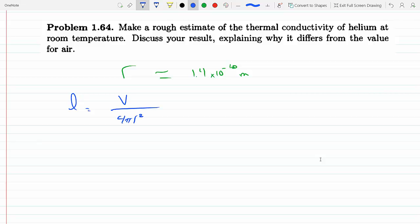We could replace V over N with the ideal gas law. We get V over N equals KT over P, so then we get L to be 1 over 4πr² times V over N, which is K Boltzmann's constant times temperature divided by pressure.